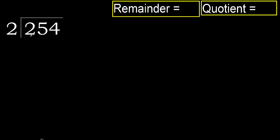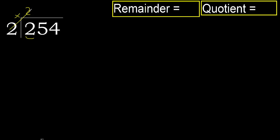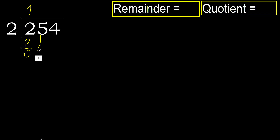254 divided by 2. 2 multiplied by which number is nearest to 2 but not greater? 2 multiplied by 2 is 4, which is greater. 2 multiplied by 1 is 2, which is not greater. 2 minus 2 equals 0. Next, eliminate 0.